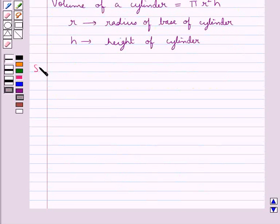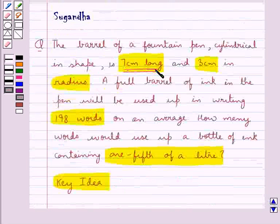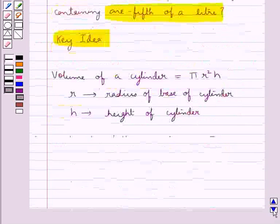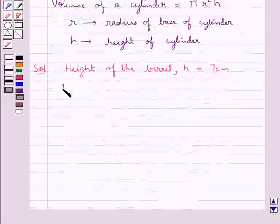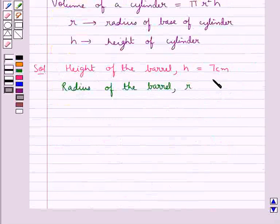Now we move on to the solution. The height of the barrel, h, is given as 7 cm. It is given in the question that the barrel is of the cylindrical shape. Then we have the radius of the barrel, r, is given as 3 cm.